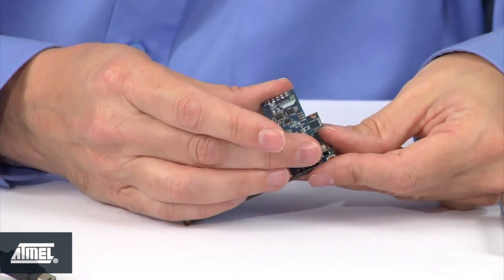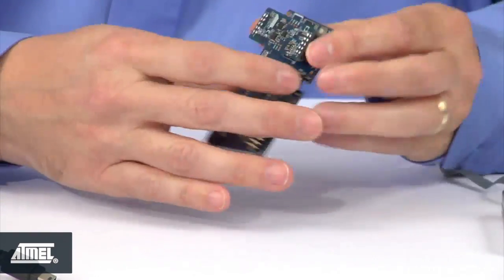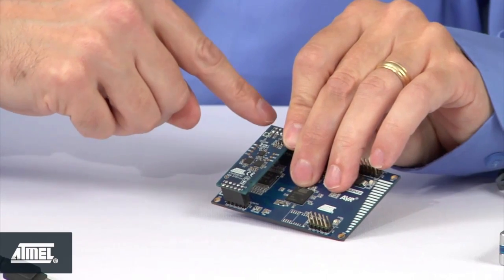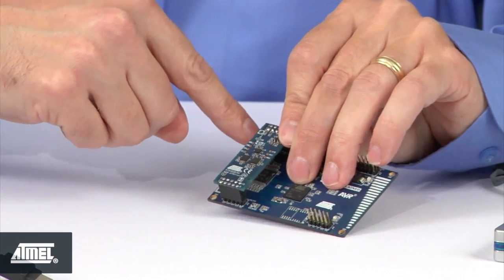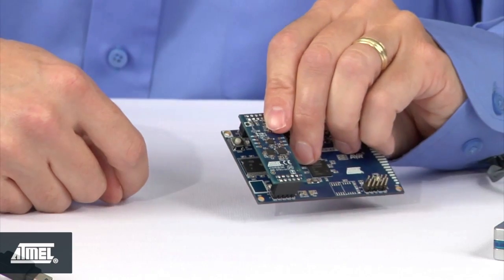So I put that on these headers here which are on the left side as I'm facing the board. You can see that there's little white marks on one mounting hole on each of the sensor board and the UC3 board. As long as you get those lined up next to each other, you'll be just fine.